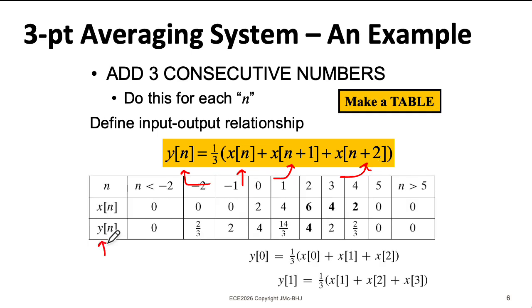To figure out the output y for y equals 0, we look at x0, x1, and x2. That gives us 2 plus 4 plus 6. That gives us 12. And dividing 12 by 3 gives us 4. We can march along, and to figure out what y of 1 is, we look at x1, x2, and x3. We add those up. 4 plus 6 plus 4. That gives us 14. Divide by 3. I've got 14 over 3. And we can keep going. Eventually, we only have zeros going in, so we have zeros coming out. And over on this side, we have only zeros going in, so we only have zeros coming out.